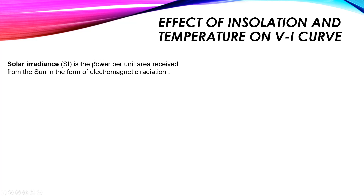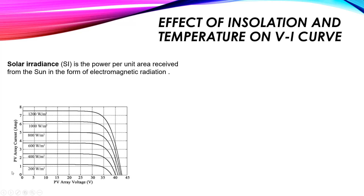It can also be expressed as energy per unit area — kilowatt-hours per meter squared. Now, here you can see the relation between the PV array current and the PV array voltage. At a solar irradiance of 200 watts per meter squared, the short-circuit current is nearly 1.2 amperes and the maximum voltage is nearly 38 volts.